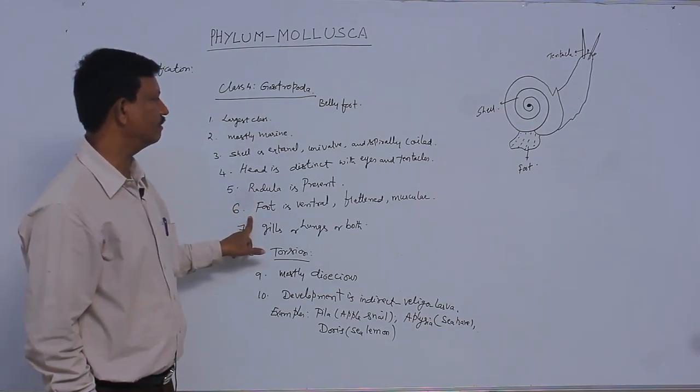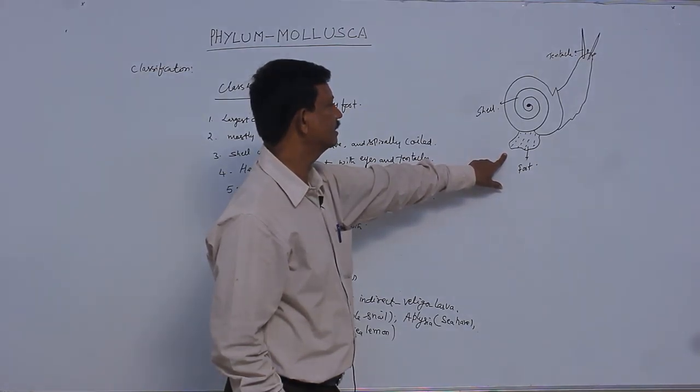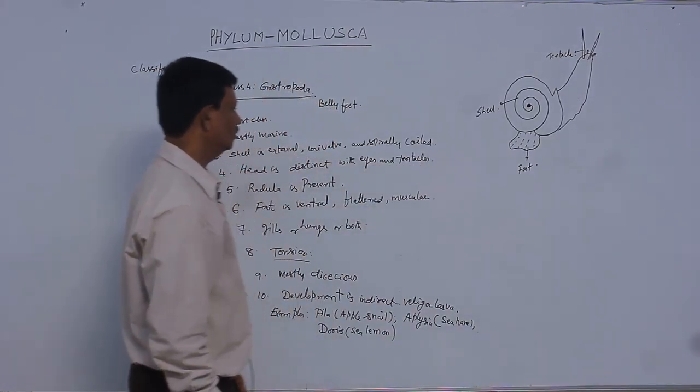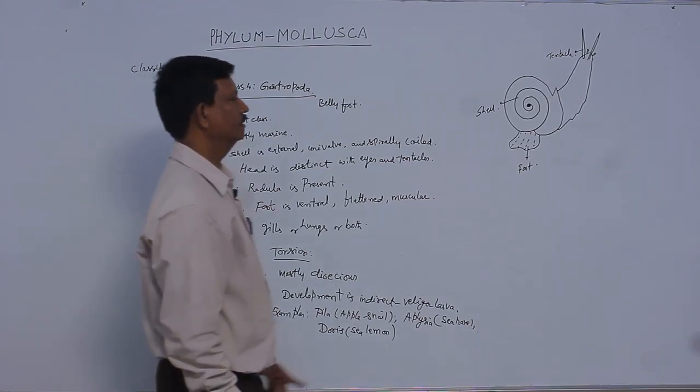The foot is ventral, flattened, and muscular. It is situated on the ventral side of the body and is highly muscular. It helps in locomotion.